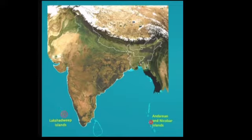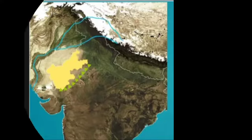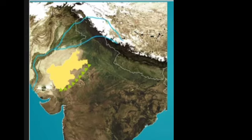The fifth division is the islands. The Indian territory includes a large number of islands, among which the Andaman and Nicobar Islands and Lakshadweep Islands are the major island groups. The Andaman and Nicobar Islands are located in the Bay of Bengal and include 265 big and small islands. The Lakshadweep Islands are located in the Arabian Sea and are a group of 25 islands.